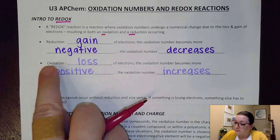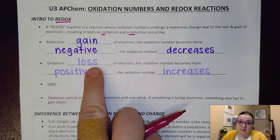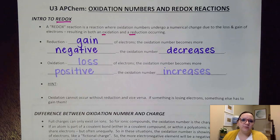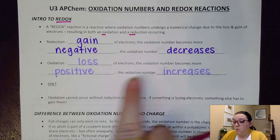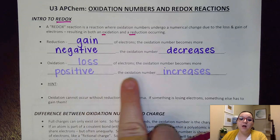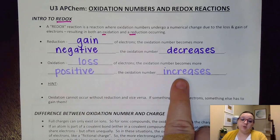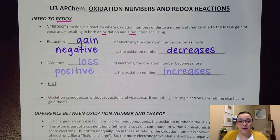For oxidation, that's where we have a loss of electrons. If I'm losing those negative particles, the oxidation number would become more positive, and so the oxidation number would increase on a number line, venturing more towards the positive end of the spectrum.